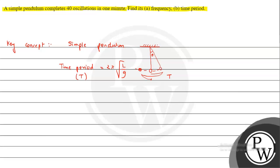The time period tells us how much time it takes to complete one oscillation. Frequency is the number of oscillations per second, and it is the reciprocal of the time period. Its unit is per second (Hz). These are the basic key points to keep in mind.